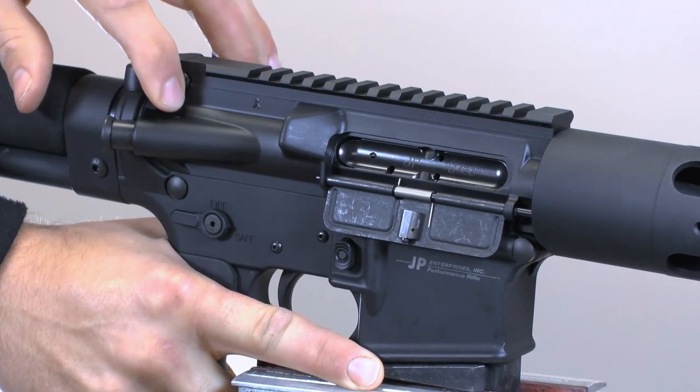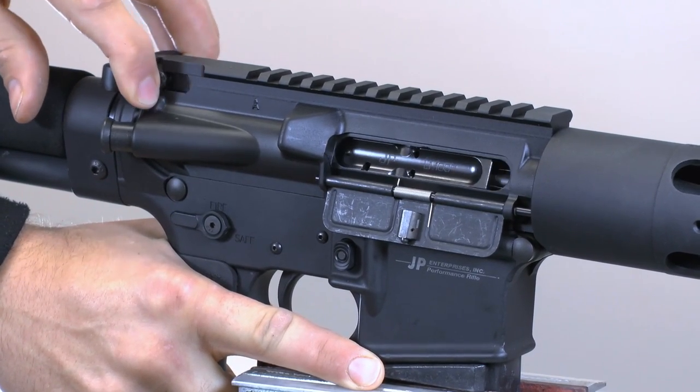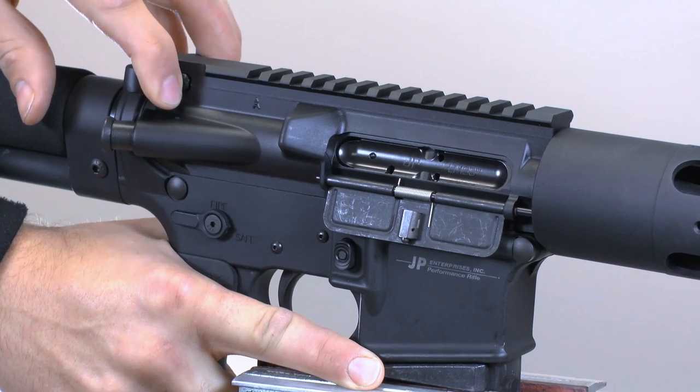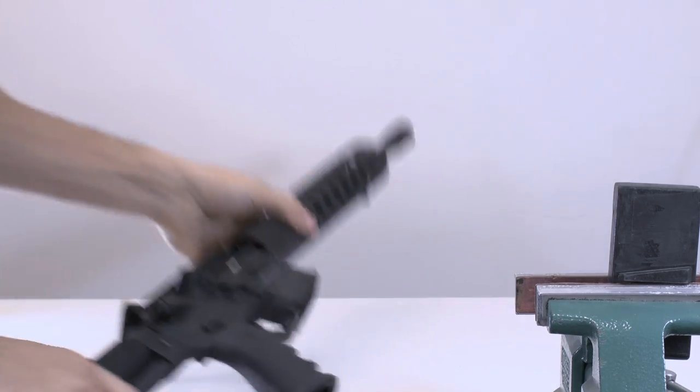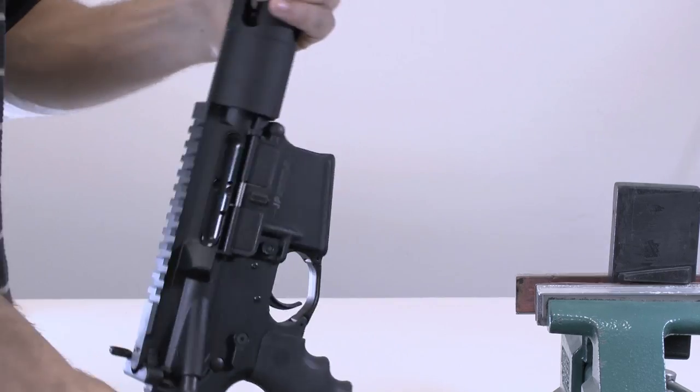When closing the upper assembly down, watch to make sure that the rear of the bolt carrier makes contact with the SCS buffer head. If you shake the rifle, you should not be able to feel the SCS moving back and forth.